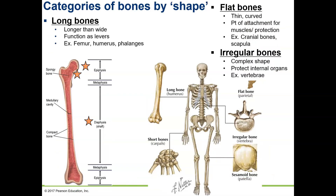The 206 bones of the adult skeleton can be divided into five categories based on their shapes. We'll focus on three of the most common. First are long bones, which are generally cylindrical and longer than they are wide. They function as levers. Examples of long bones include the femur, the humerus, and the phalanges of both the fingers and the toes.